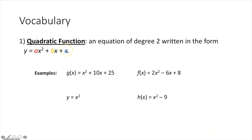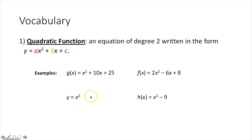First vocabulary term is a quadratic function. That's an equation of degree 2 written in the form y equals ax squared plus bx plus c. Note that they don't all necessarily have to have three terms. Like y equals x squared — that's a quadratic function where a is 1, b is 0, and c is 0. Quadratic functions just need to be degree 2.